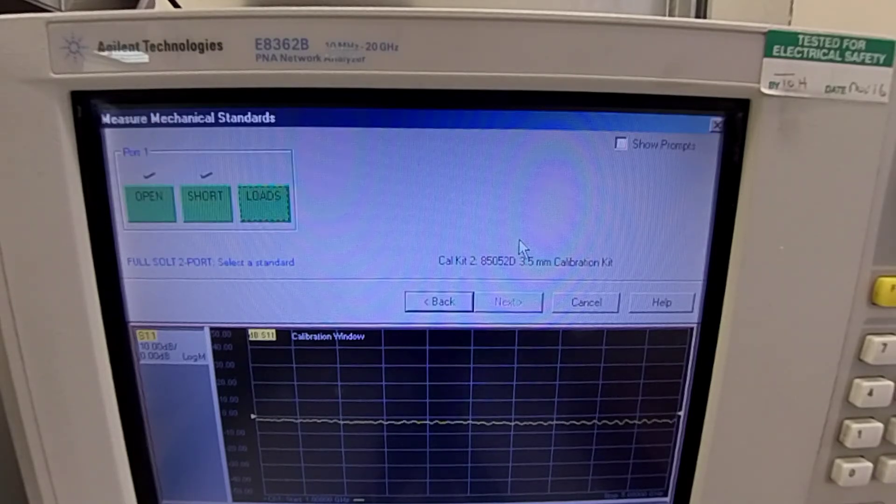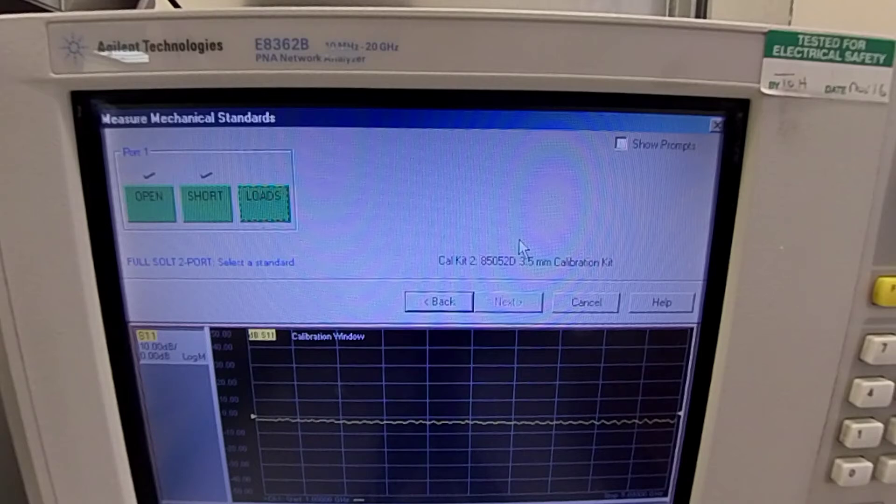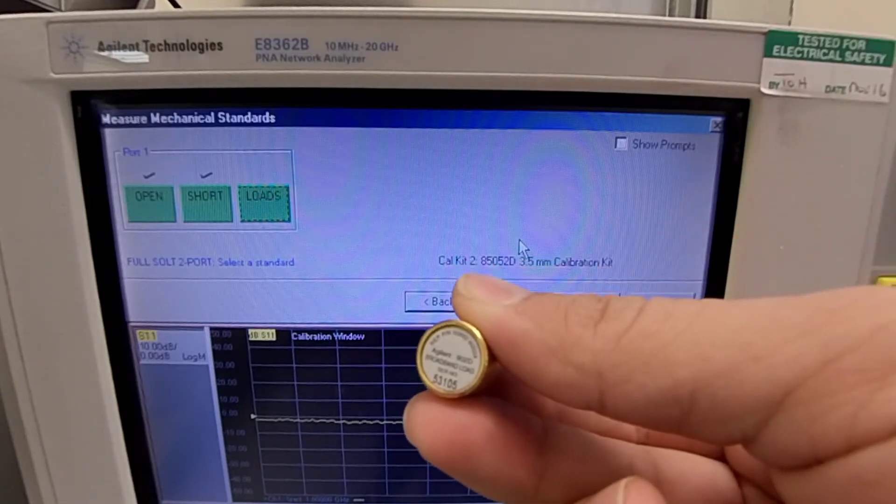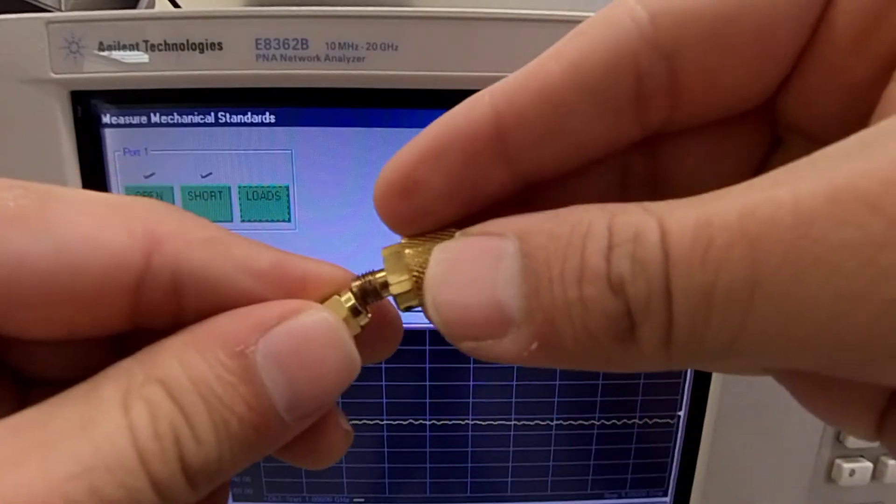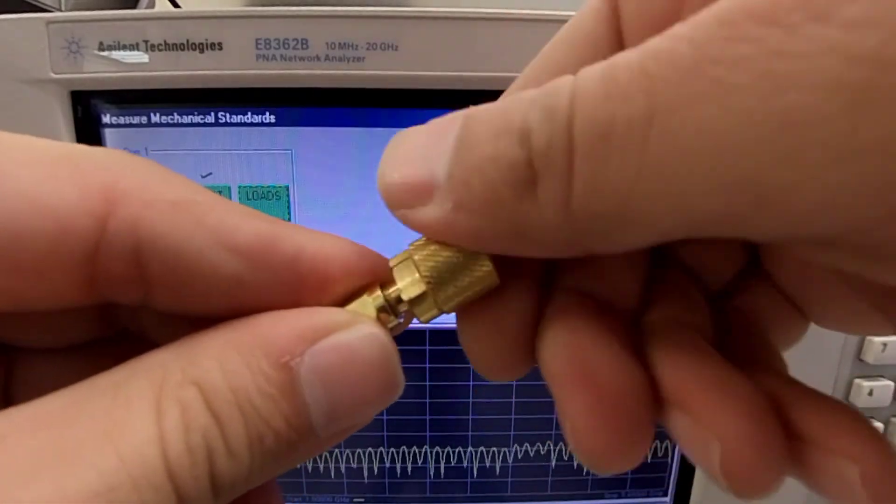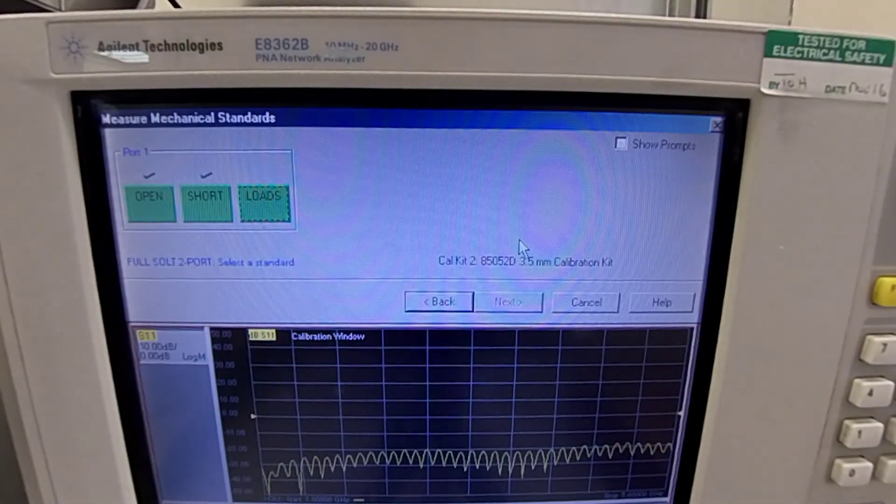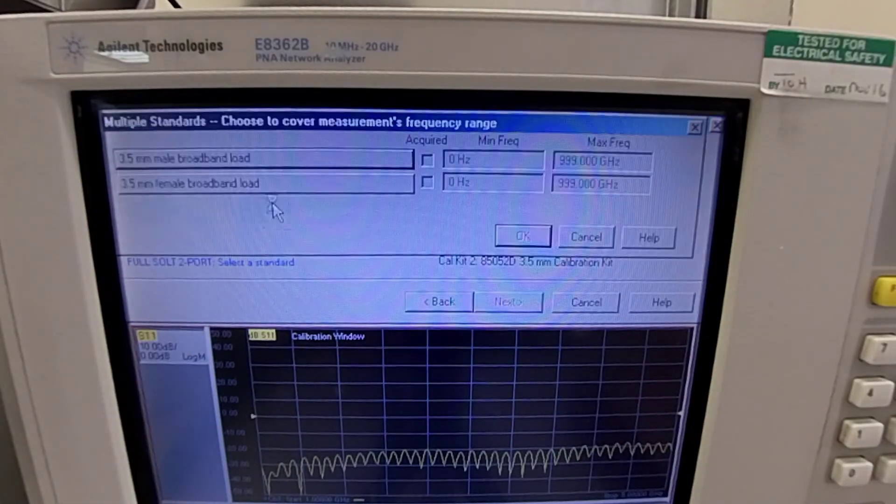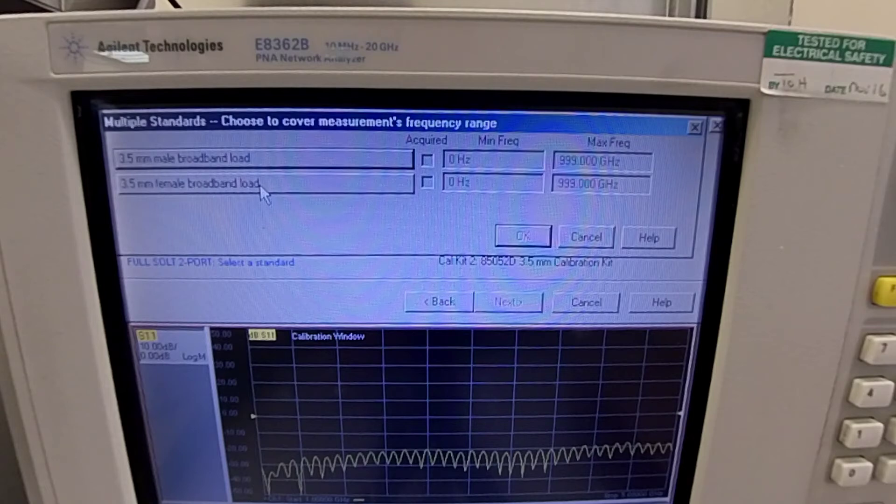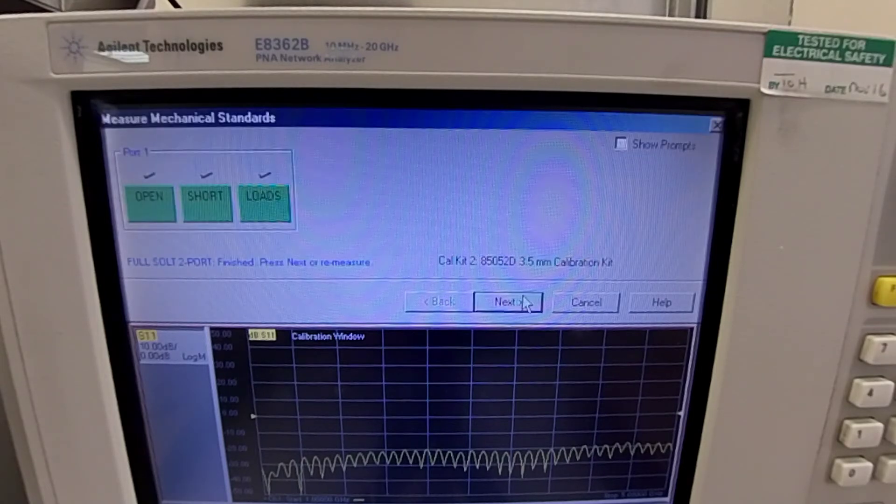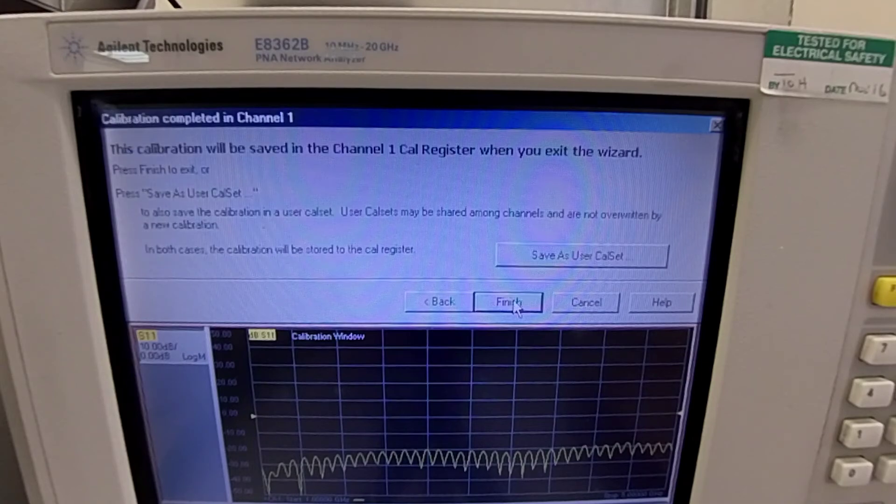The final step is to select a broadband load. And select load. Press next. And we are finished with the calibration.